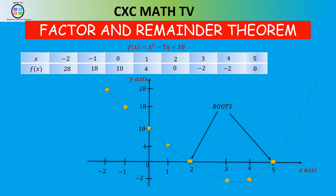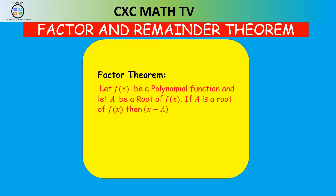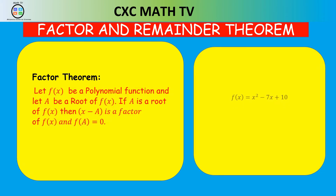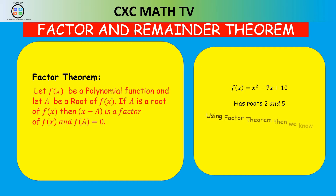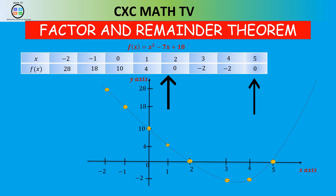So what is this Factor Theorem? Factor Theorem states: let f of x be a polynomial function and let a be a root of f of x. If a is a root of f of x, then x minus a is a factor of f of x, and f of a equals 0. Going back to f of x equals x squared minus 7x plus 10 with roots 2 and 5: by Factor Theorem, x minus 2 and x minus 5 are both factors, and f of 2 equals 0 and f of 5 equals 0. That's confirmed by our graph.